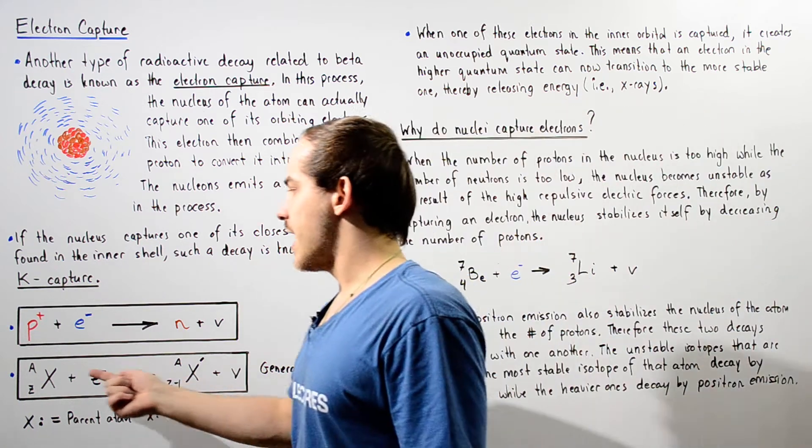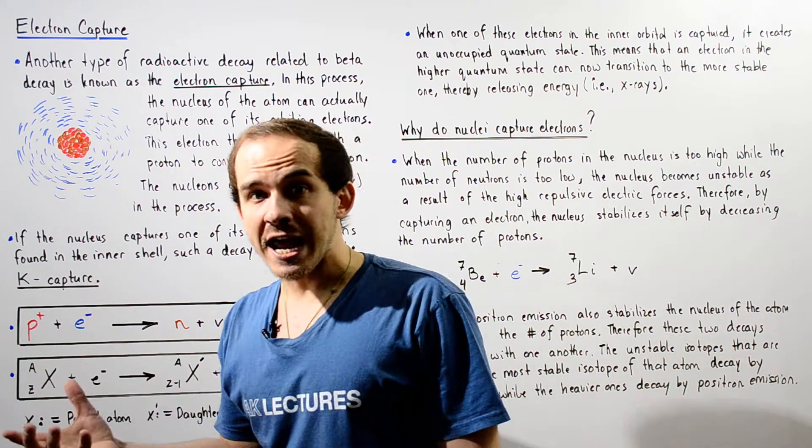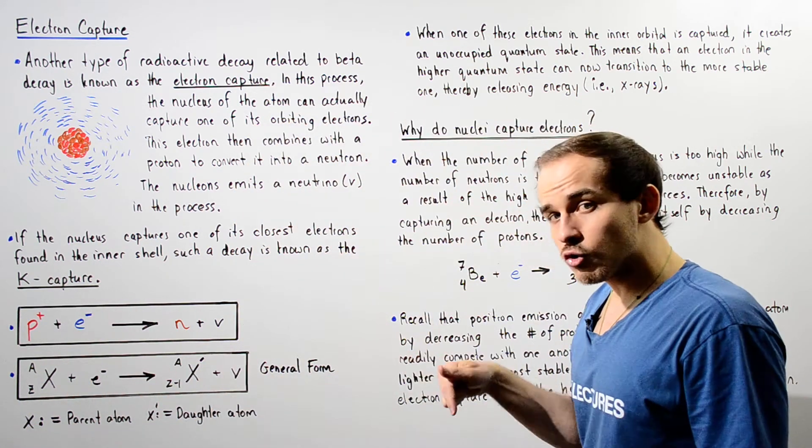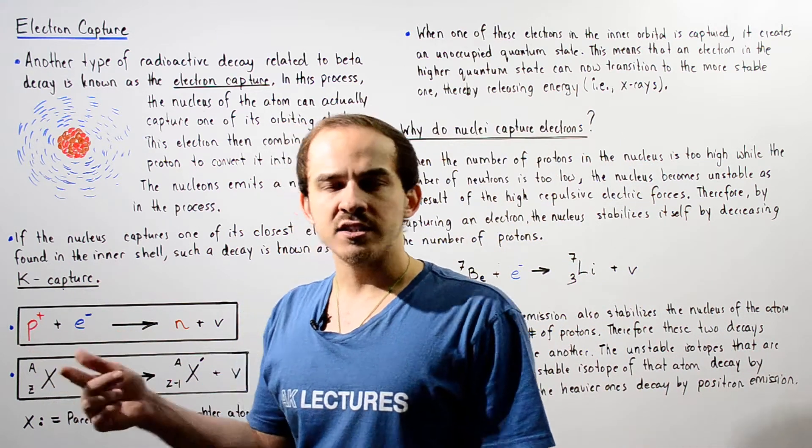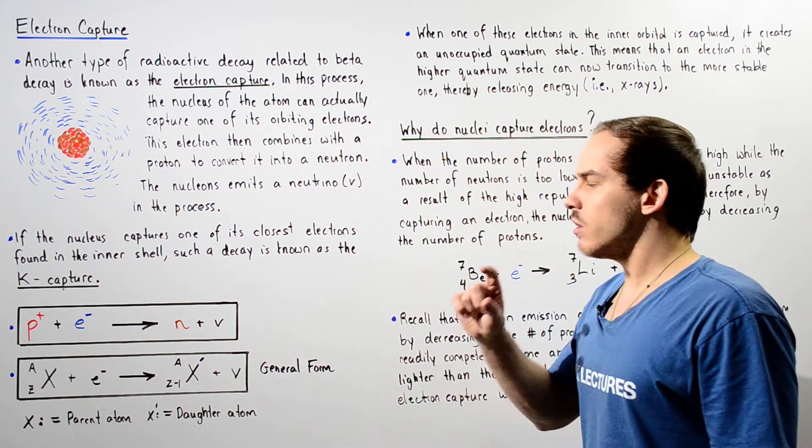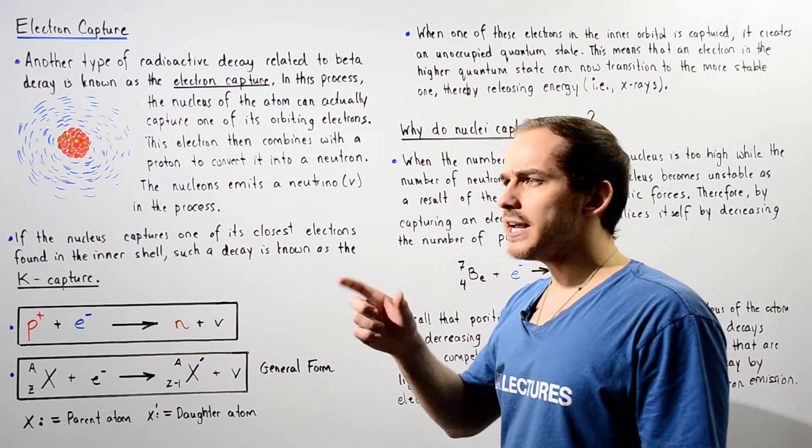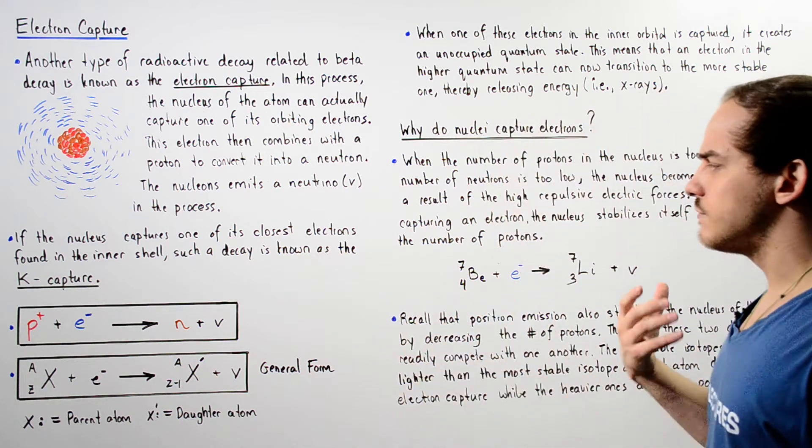Now the number of nucleons A doesn't actually change because even though we decrease the number of protons by one, we increase the number of neutrons by one. So there is no change in the number of nucleons.